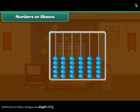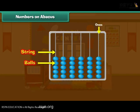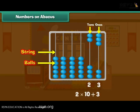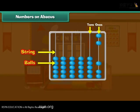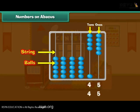Numbers on abacus. We can use an abacus for counting. An abacus has many strings and each string has many balls. We use the rightmost string to count ones and the next string to count tens. This abacus has three balls in the ones string and two balls in the tens string, so the number is 23. Another abacus has five balls in the ones place and four balls in the tens place — therefore, the number is 45.